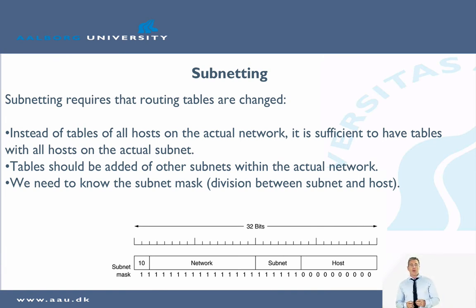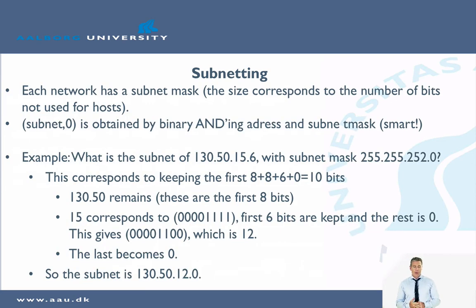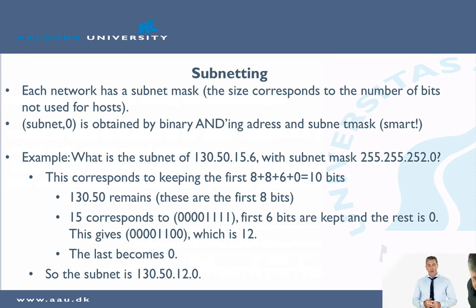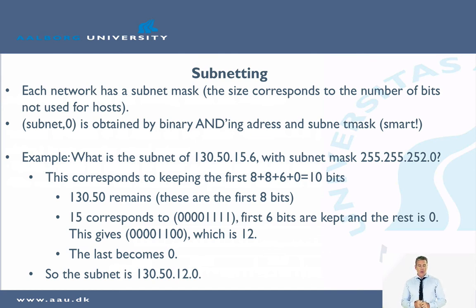The way subnetting works is that each network has a subnet mask, and the size of the subnet mask corresponds to the number of bits not used for the host. The subnet address is obtained by binary ANDing the IP address with the subnet mask. For example, assume we have an IP address of 130.50.15.6 and a subnet mask of 255.255.255.0, and we want to find out which subnet this address belongs to.